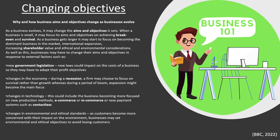Changing objectives: why and how business aims and objectives change as businesses evolve. As a business evolves, it may change the aims and objectives it sets. When a business is small, it may focus its aims and objectives on achieving break-even and survival — these are basic aims for a start-up business. As a business gets larger, it may start to focus on becoming the dominant business in the market, international expansion, increasing shareholder value, and ethical and environmental considerations.